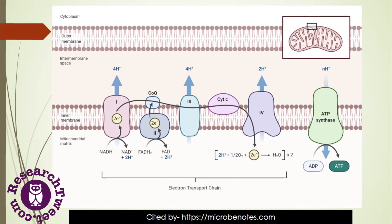Complex 4, or Cytochrome C oxidase, catalyzes the transfer of electrons from the reduced form of Cytochrome C to molecular oxygen. It consists of 13 subunits and contains two heme groups — heme A and heme A3 — which have distinct features due to their different environmental locations within Cytochrome C oxidase. The last component is ATP synthase, which synthesizes adenosine triphosphate.